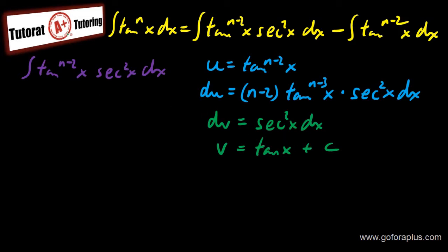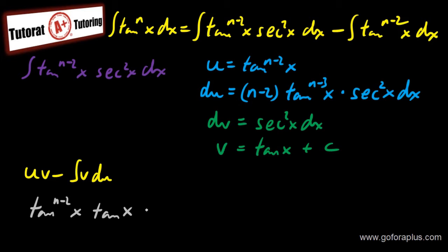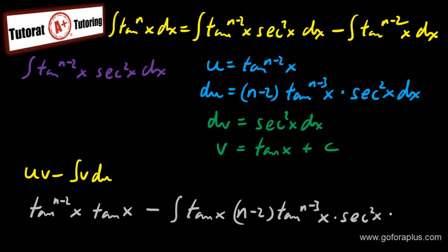Now that I have everything, I will use my integration by parts formula: uv minus the integral of v du. Replacing u = tangent^(n−2)(x) and v = tangent(x), I get tangent^(n−2)(x) · tangent(x) minus the integral of tangent(x) · (n−2) · tangent^(n−3)(x) · secant²(x) dx. I can group the tangent terms: tangent(x) · tangent^(n−3)(x) becomes tangent^(n−2)(x) · secant²(x), and the first term becomes tangent^(n−1)(x).